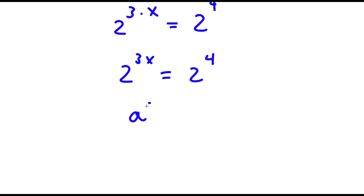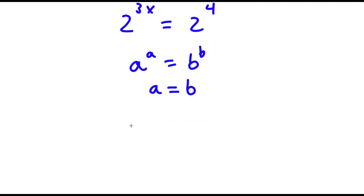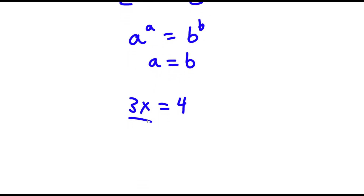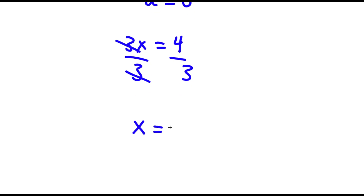Now, if I have something in the form a to the power of a is equal to b to the power of b, then a equals b. So in this case, 3x is equal to 4. To solve this, all I have to do is divide both sides by 3, and I get x is equal to 4 over 3.